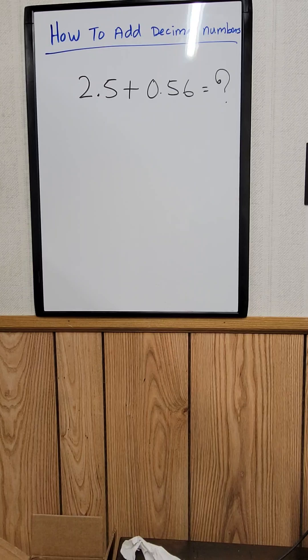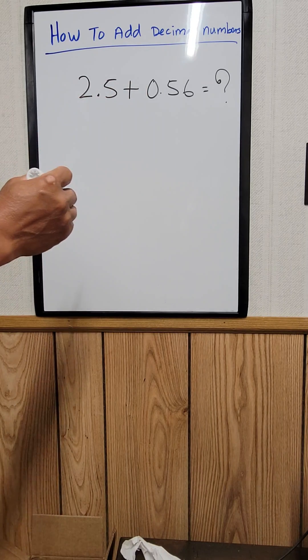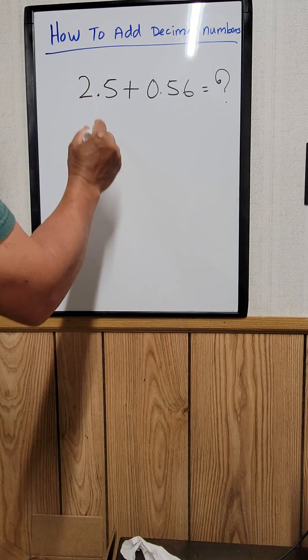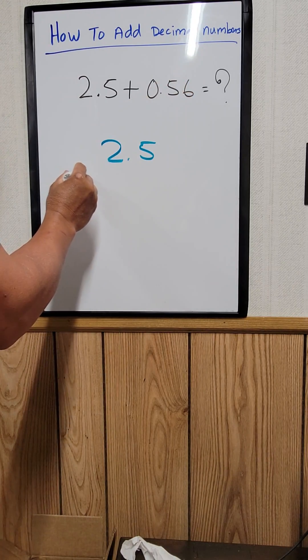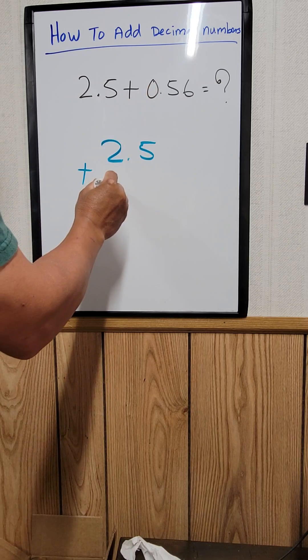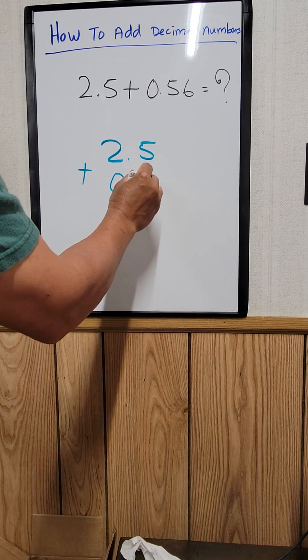So what we need to do is just line up the decimal places. So write that 2.5 plus 0.56.